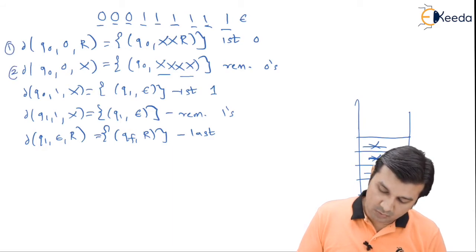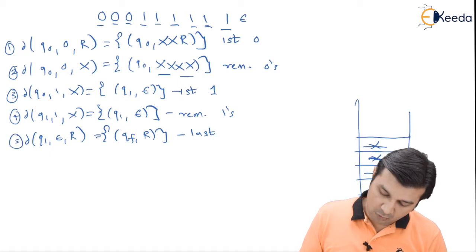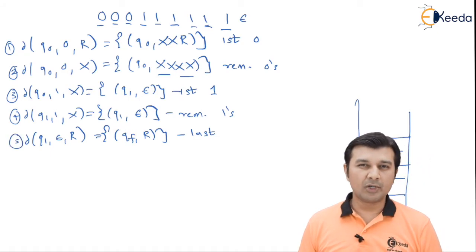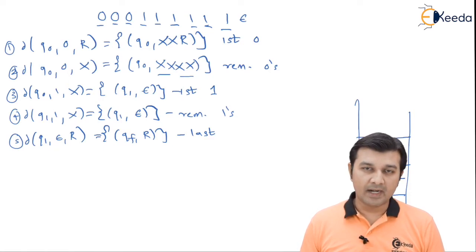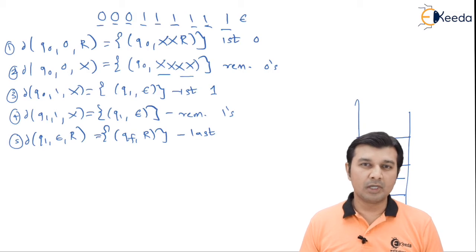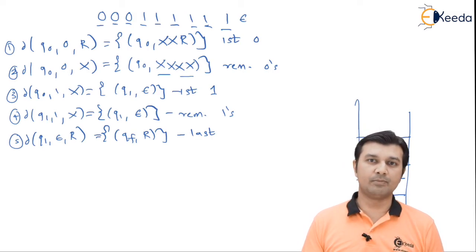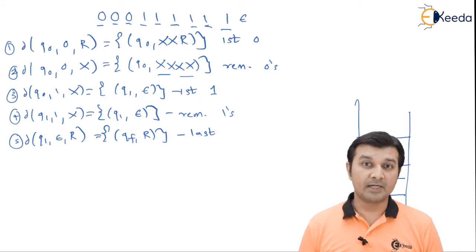Let us label these rules: first, second, third, fourth and fifth. You need not write the rules as numbers in the exam; these are simply transition functions. I am writing these numbers 1, 2, 3, 4, 5 only because when I explain you, I want you to understand which rule I am using in the examples.